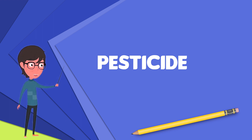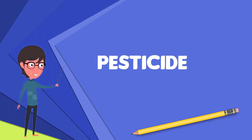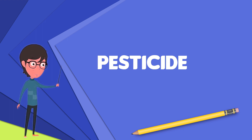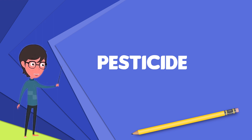Target pests can include insects, plant pathogens, weeds, mollusks, birds, mammals, fish, nematodes, and microbes that destroy property, cause nuisance, or spread disease, or are disease vectors.